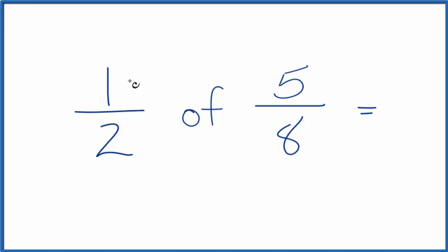What we're trying to do here is we have one over two of five over eight. So we're trying to figure out the fraction that we'll end up with. The easiest way to do this is to think of the of here as multiplication.